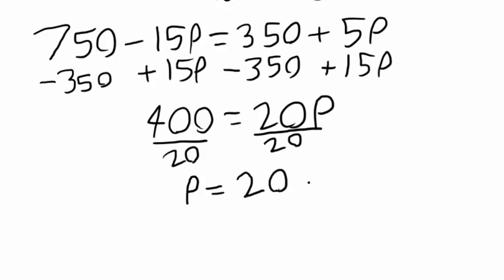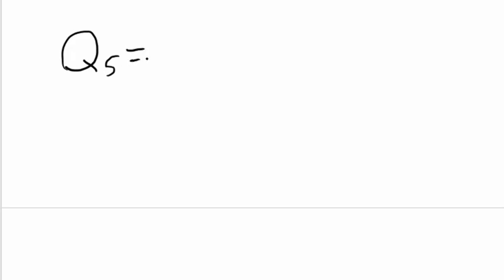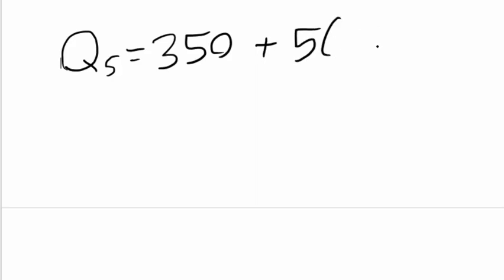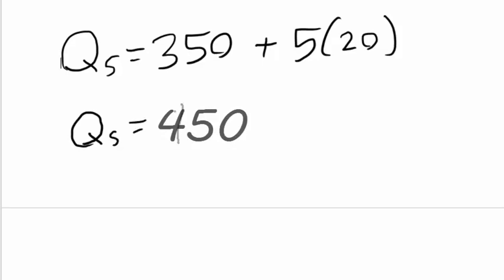So in equilibrium, the price we would set is $20. Now to find our quantity, we plug our price into the quantity supplied function: 350 plus 5 times 20. Plugging that into a calculator, we get a quantity supplied of 450.